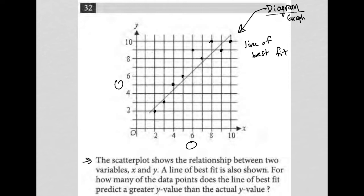The question says the scatter plot shows the relationship between two variables x and y. A line of best fit is also shown. For how many of the data points does the line of best fit predict a greater y value than the actual y value?